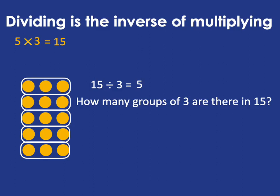So there's the opposite idea. 5 groups of 3 is 15. 5 times 3 is 15 immediately means that 15 divided by 3, how many groups of 3 are there in 15, is 5. So we can always get an answer to a division by thinking about the multiplication that goes with it.